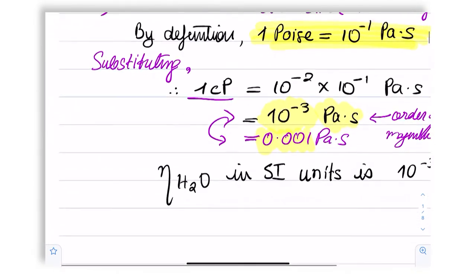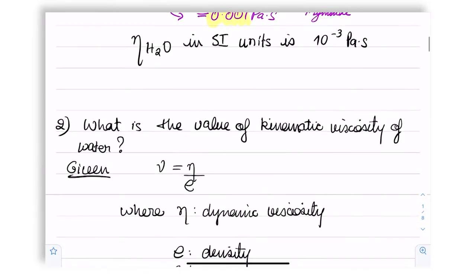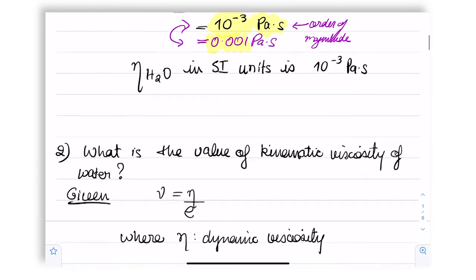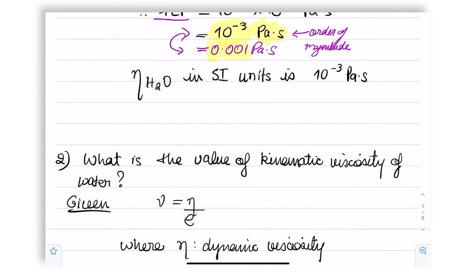The viscosity of water can also be expressed in terms of the kinematic viscosity. So the next problem relates to the question, what is the value of kinematic viscosity of water? Now you may recall that in our previous lectures we have defined kinematic viscosity as nu equals eta by rho. These are all Greek letters. Rho means density, eta is dynamic viscosity, and nu is the symbol for kinematic viscosity.